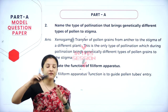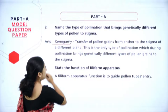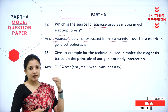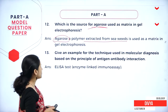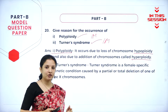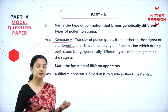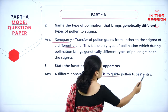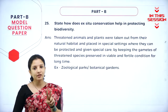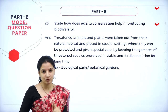Flowers of two different plants involved in pollination is xenogamy. To study antigen-antibody interaction, the tool used is the ELISA test. Polyploidy occurs either due to addition or deletion of a chromosome. The function of the filiform apparatus is to guide the pollen tube's entry. There are two types of conservation: in-situ conservation and ex-situ conservation.